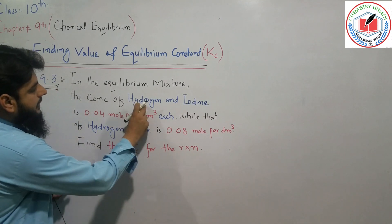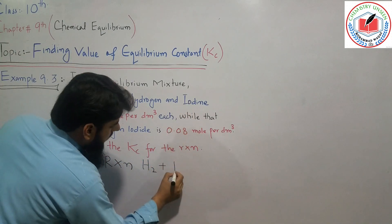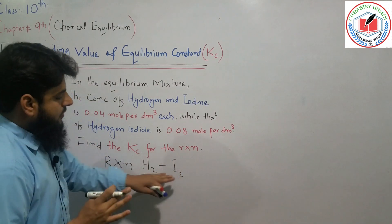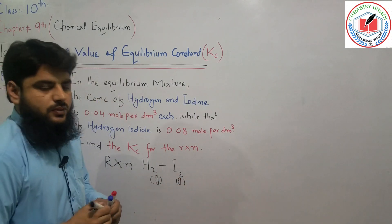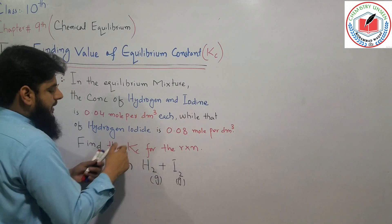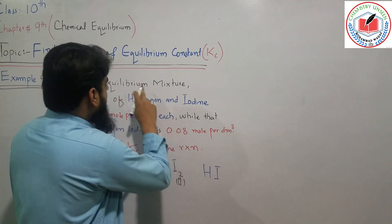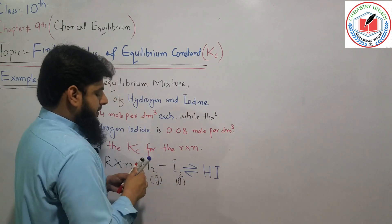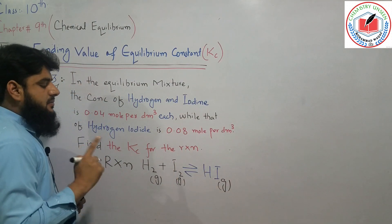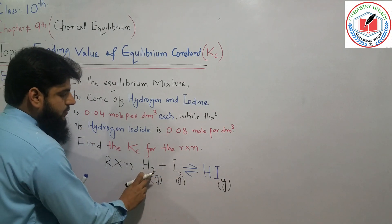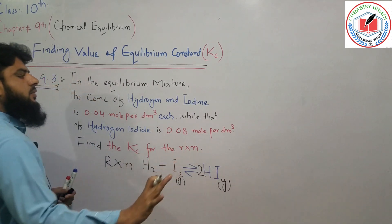The general reaction for hydrogen and iodine combining to form hydrogen iodide is the primary reaction. There is a combination of hydrogen and iodine. The equilibrium is established, and we have the reaction with a balanced equation. The reaction balance is confirmed.